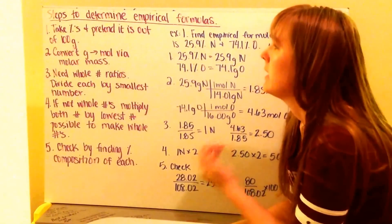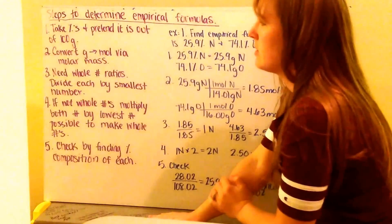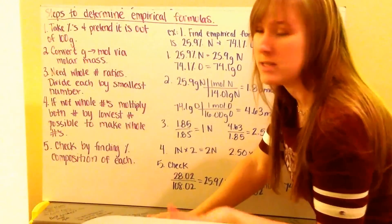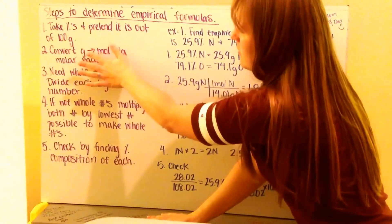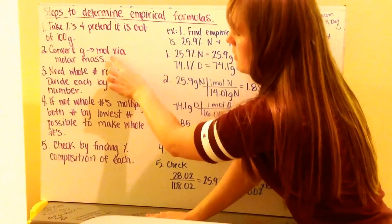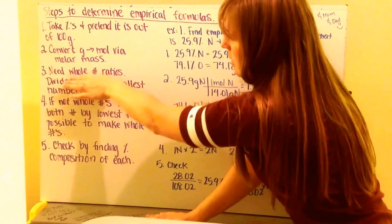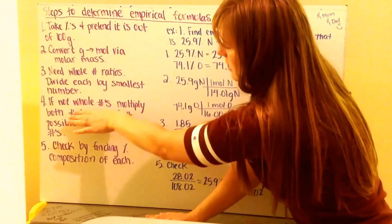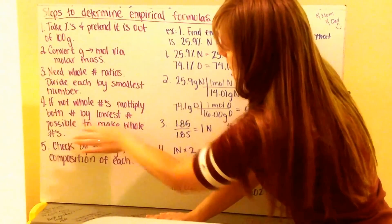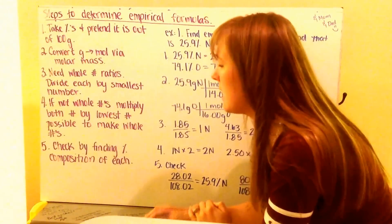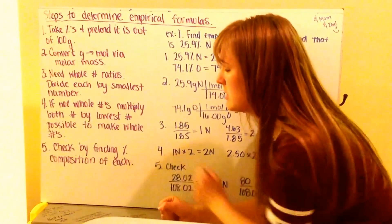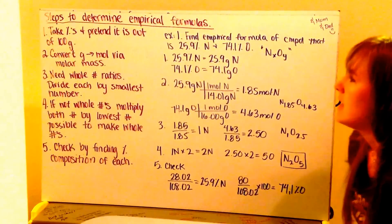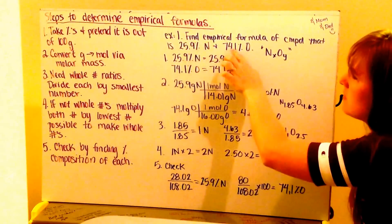Moving forward to ways that we can actually determine our empirical formulas, there are a couple of steps we need to follow. First, take the percents and pretend it's out of 100 grams. Then convert our grams of each element to moles via the molar mass. Step three, we need whole number ratios, so divide each number by the smallest number. Step four, if we're still not getting whole numbers, multiply both by the lowest number possible to make whole numbers. Step five, we can check our work by finding the percent composition of each. So let's walk through example number one, where we find our empirical formula of a compound that is 25.9% nitrogen and 74.1% oxygen.